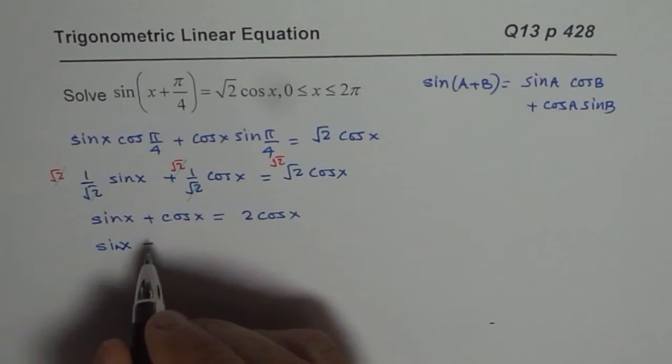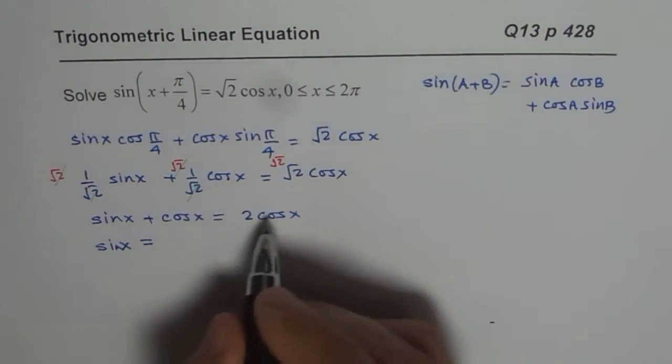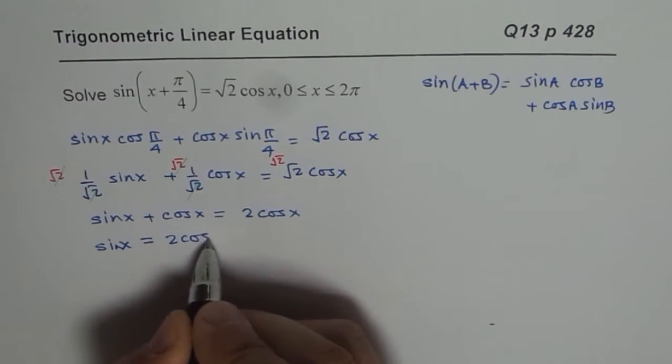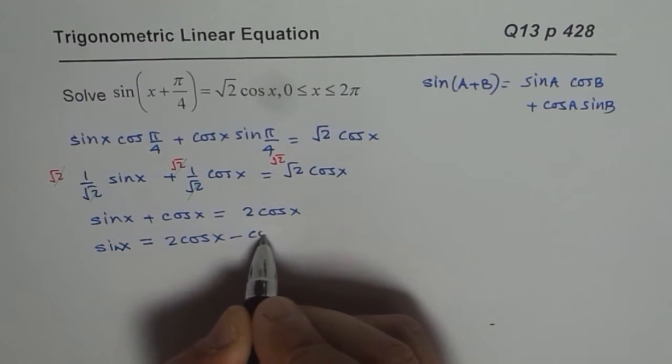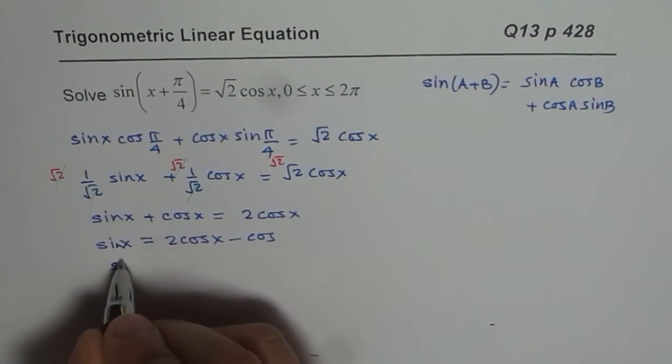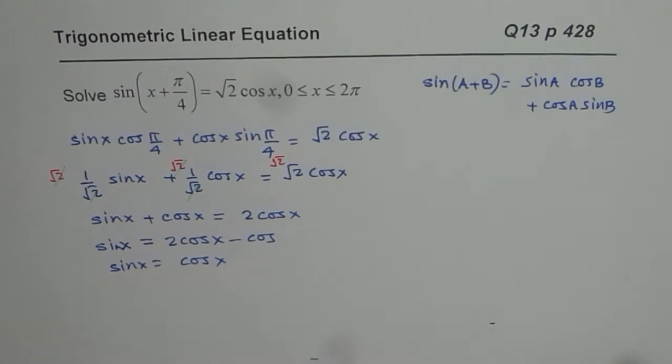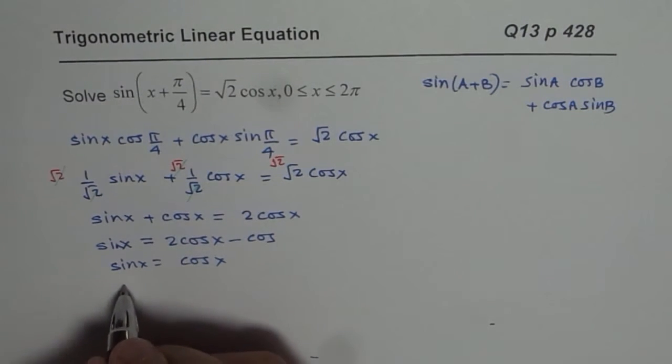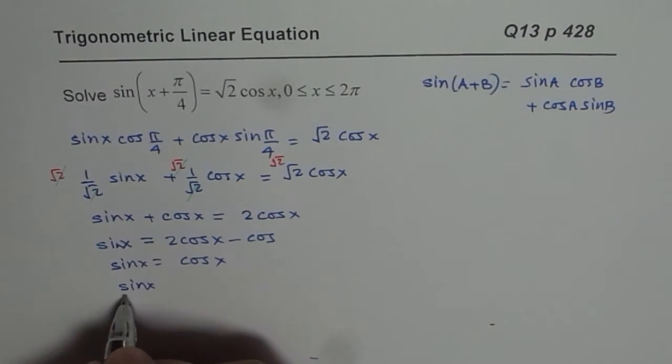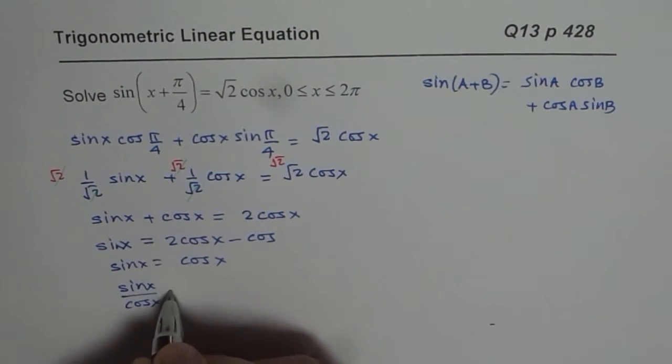sin x = 2 cos x - cos x. So we get sin x = cos x. Then we can divide by cos x and say sin x / cos x = 1.